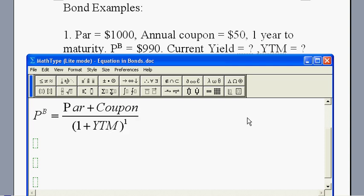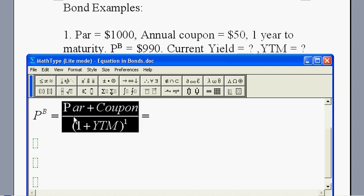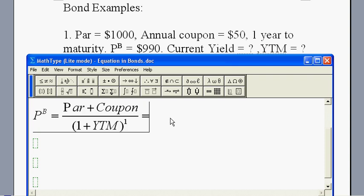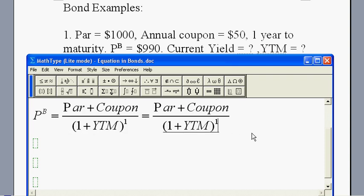For this bond, the future cash flow is the par plus the coupon. To make it a present value, we need to divide it by a discount factor. Here it is 1 plus the yield to maturity to the first power. Why? Because it is 1 year to maturity. Anything to the first power is itself, so in the denominator we only have 1 plus the yield to maturity.